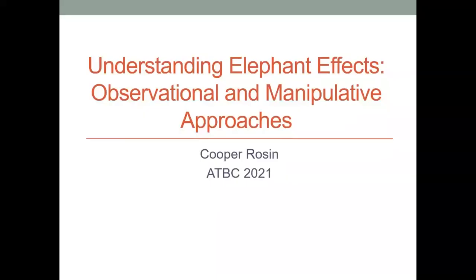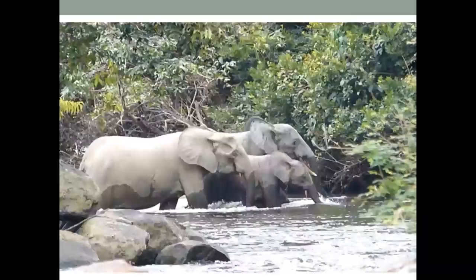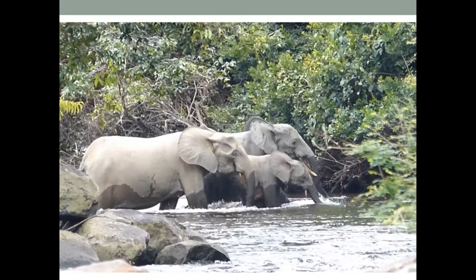Thanks for attending my talk. I'll be presenting some work conducted in collaboration with John Polson, who unfortunately can't join us for this session. I'll be talking about work in the Afrotropics. When we think of the Afrotropics, the first thing many of us think about is elephants. Elephants are among the largest and most charismatic species on Earth. We're interested in them as ecologists because they have a disproportionate effect on their forest environment, and as conservationists because they're under pretty extreme threat — particularly in Central African forests, having recently been designated their own species and are critically endangered.